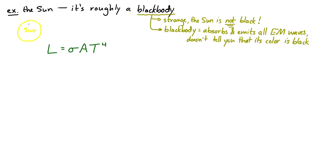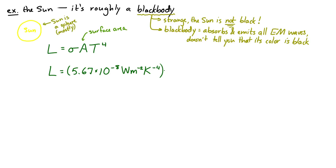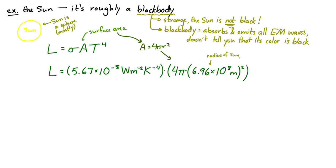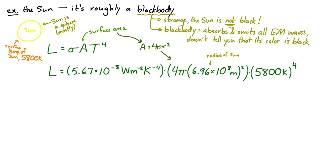Luminosity equals sigma times A times T to the fourth. Sigma is the constant 5.67 times 10 to the negative 8 watts per square meter per Kelvin to the fourth. For the sun, A is the surface area — the sun is approximately a sphere, so surface area equals 4 pi r squared, where r is the radius of the sun, about 6.96 times 10 to the 8 meters. T is the temperature of the surface of the sun — not the center, which is at millions of Kelvin, but the surface, which is at about 5800 Kelvin. Using these values, the luminosity of the sun comes out to about 3.9 times 10 to the 26 watts.